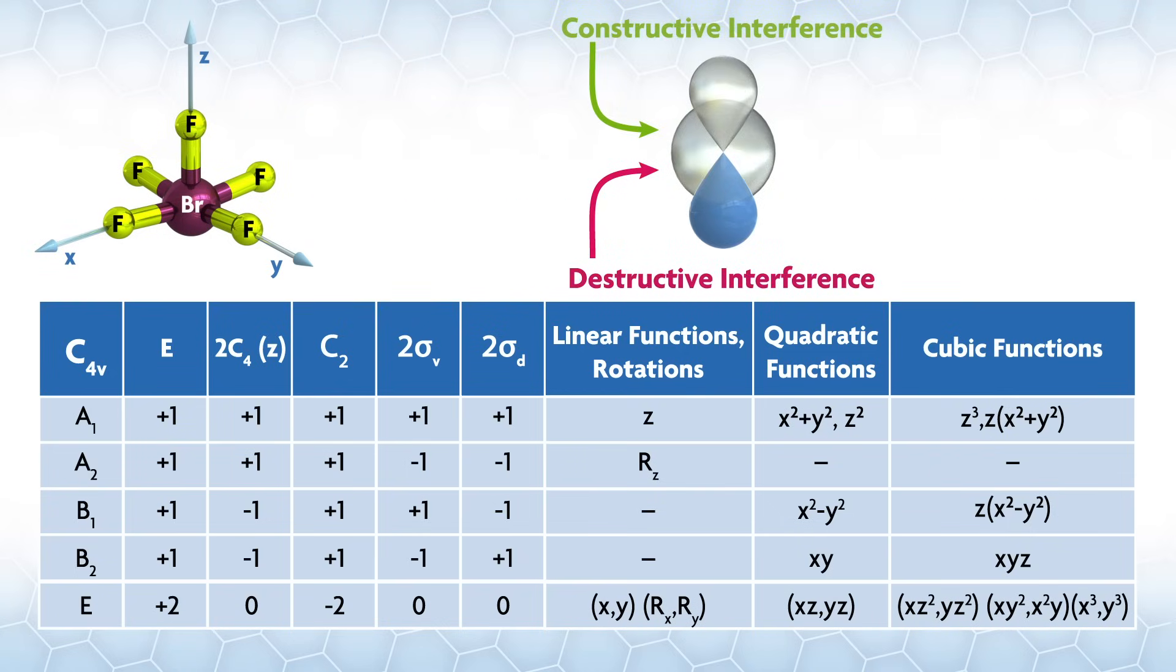For example, take two atomic orbitals, pz and s on the bromine. They're both A1, but all orbitals on the same atom are orthogonal with zero net overlap. The amount of constructive and destructive interference exactly cancels.